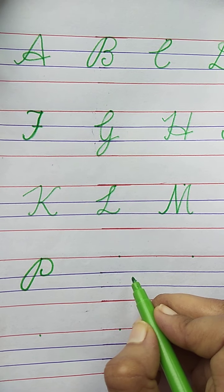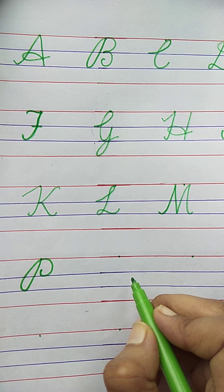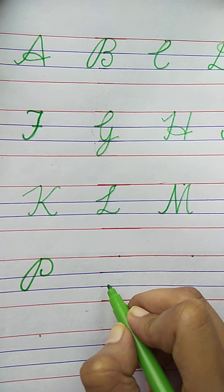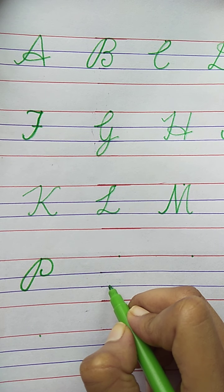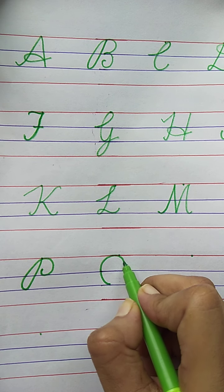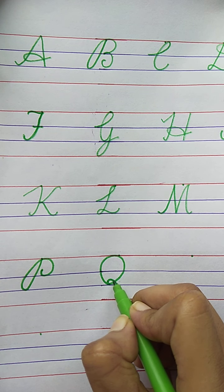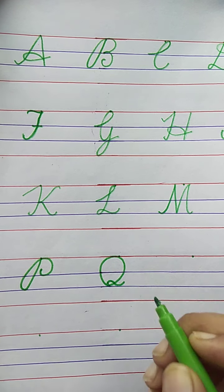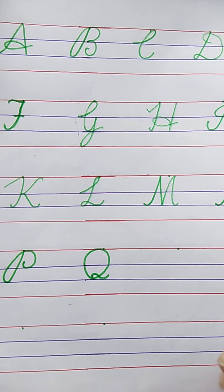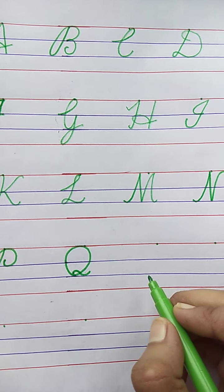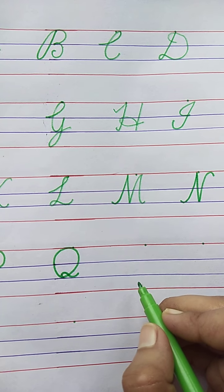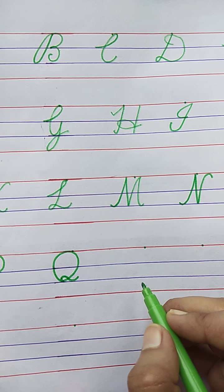Now, tell me the next letter. Q. Q for Queen. See here. Curve, one more curve, loop, and curve line. Q for Queen. The spelling of Queen is Q-U-E-E-N. Queen.